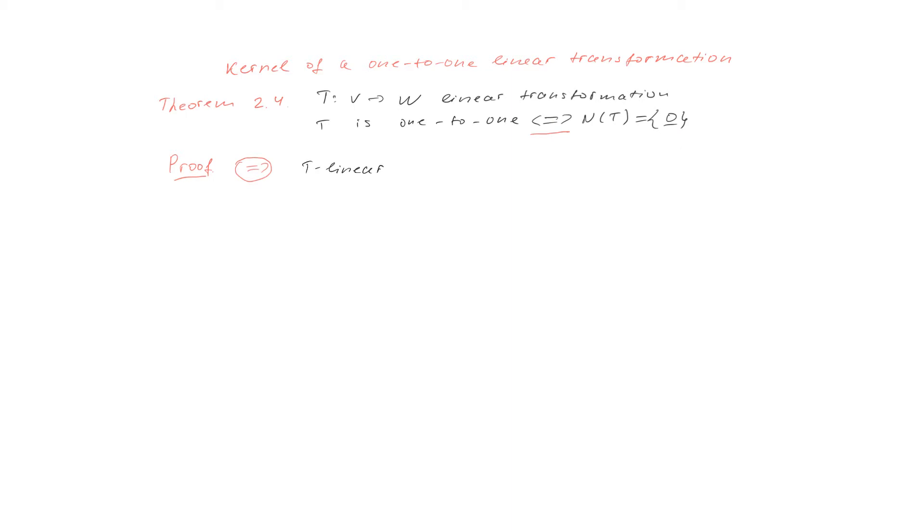Since T is a linear transformation, we know that T of zero vector is always a zero vector. We knew that zero vector is always in the kernel.